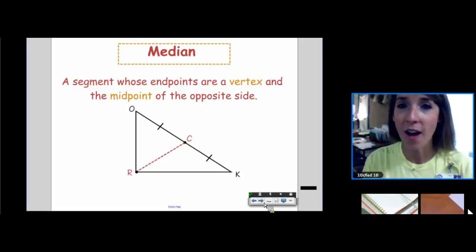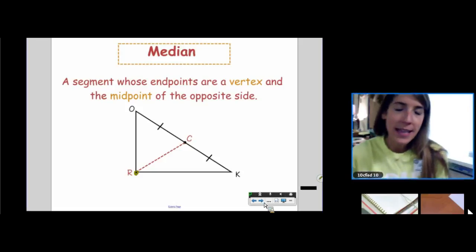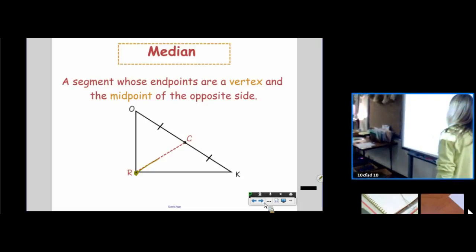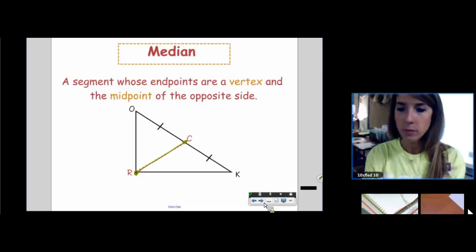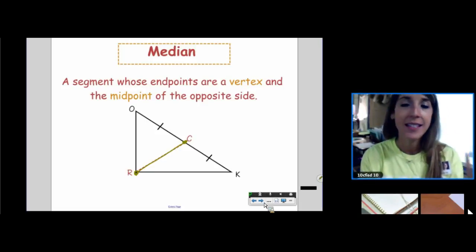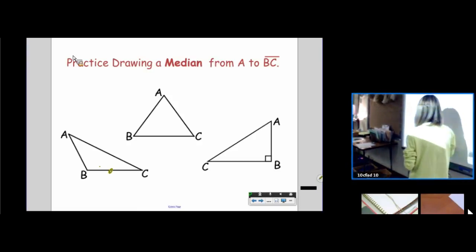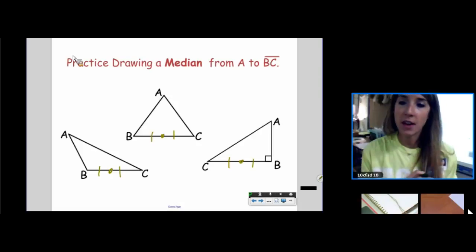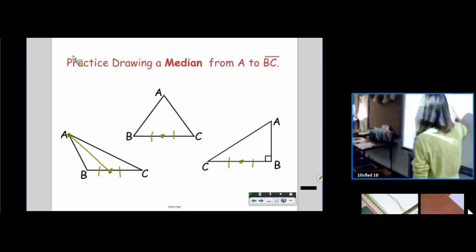So a median's job, remember these all have jobs, we're talking job descriptions today. Its job is to pass through an angle and to pass through the midpoint of the opposite side. How do we indicate that a point is a midpoint? How do we indicate that on our diagram? Tick marks, very nice. How do we indicate an angle bisector? Arcs. How do we indicate a median? Tick marks. When we draw a median in our triangle, I recommend first locating the midpoint. Your median should have tick marks on either side of that point. Then you connect the vertex to the midpoint of the opposite side.